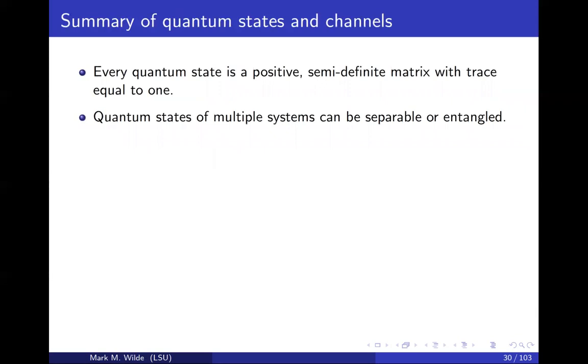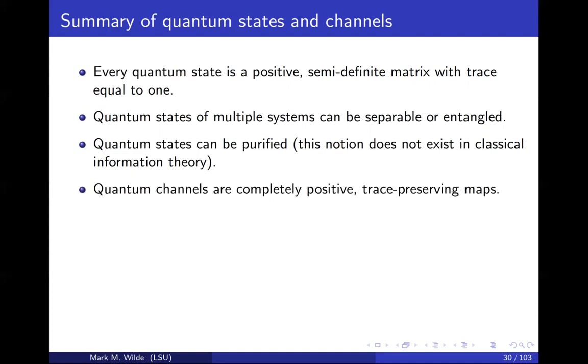And now we arrive at the summary of states and channels. Every quantum state is a positive semi-definite matrix with trace equal to one. We defined entanglement, how quantum states of multiple systems can be separable or entangled. Quantum states can be purified. There's this notion of purification that we don't have in classical information theory.